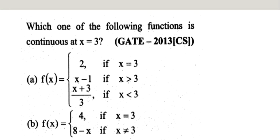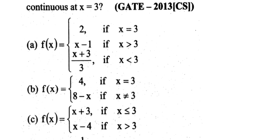Which of the following functions is continuous at x = 3? Try to identify which options are not correct. If you eliminate the wrong answers among the four subdivisions, it is easy to identify the correct answer.